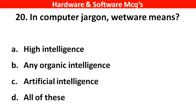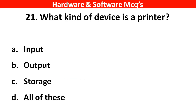Next question: In computer jargon, what does AI mean? The right answer is option C — artificial intelligence. Next question: What kind of device is a printer? The right answer is option B — output.